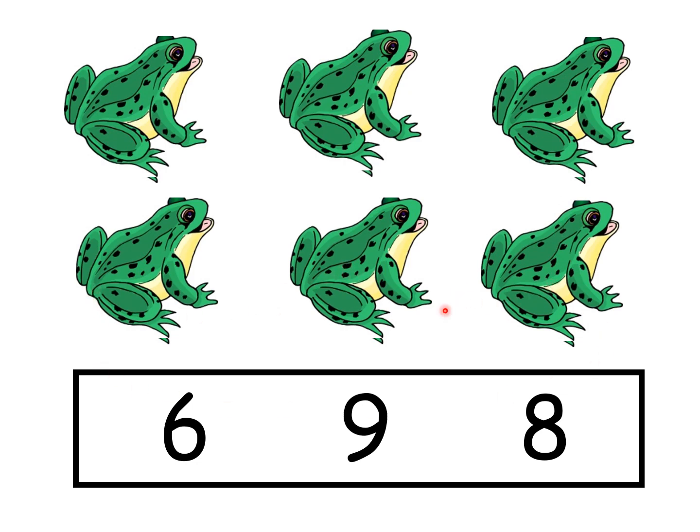Now there are six frogs here. Which number is six? Is this six? No. Then what is it? Eight. Very good. I think this is six. No. But it looks like six. Yes, this is nine. Very good. This is six. So should we circle this six? Very good. Let's circle it.